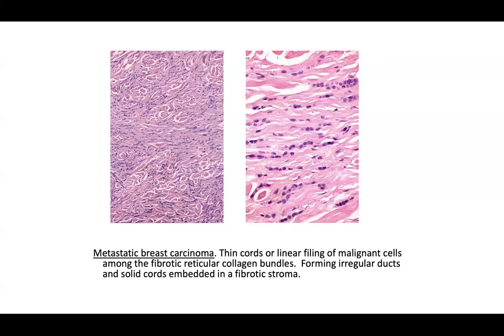For staining, CK7 and GATA3 may be positive, as well as mammaglobin, ER, PR, or HER2 (assuming it's not triple-negative breast cancer). A pankeratin stain confirms the epithelioid nature of these cells. Because the cells are small with little cytoplasm, you'll want to distinguish them from lymphocytes using lymphocyte markers, confirming these are epithelial cells rather than a reactive infiltrate.